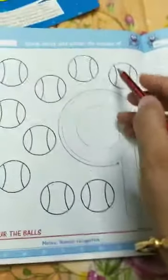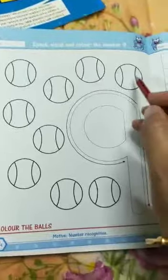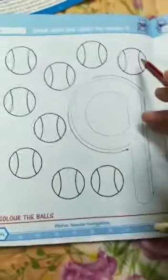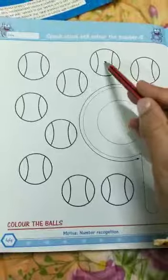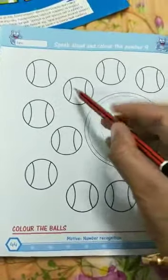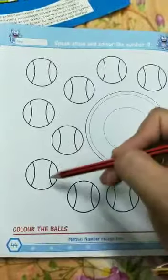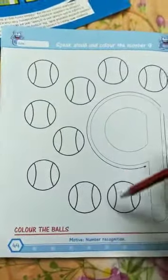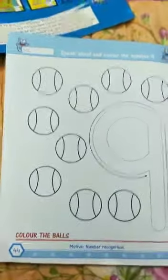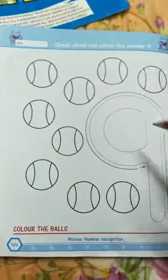We will count slowly as I have told you, so that we should not make any mistake. How many balls are there? One ball, two balls, three balls, four balls, five balls, six balls, seven balls, eight balls, and nine balls. So how many balls are these? Nine balls.